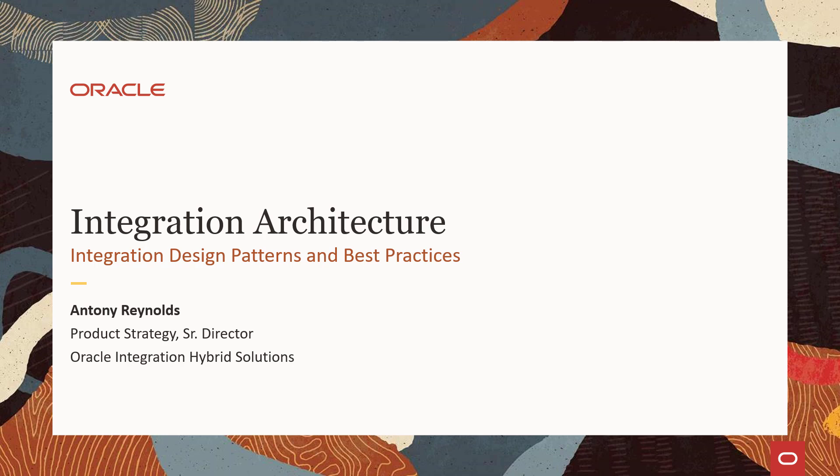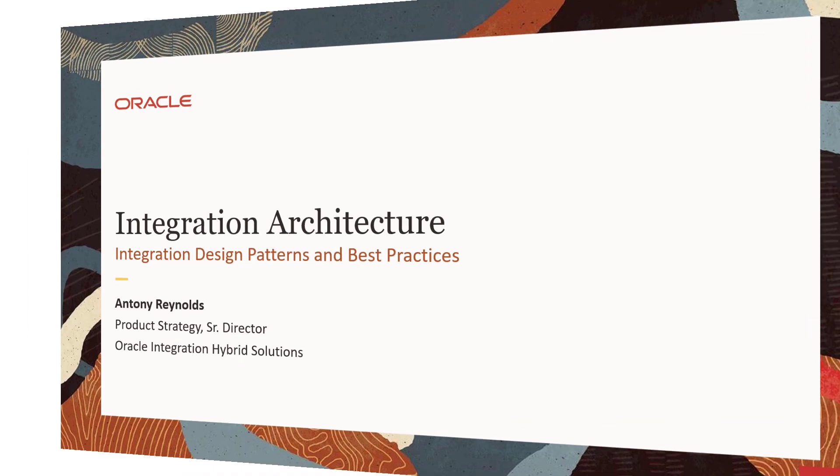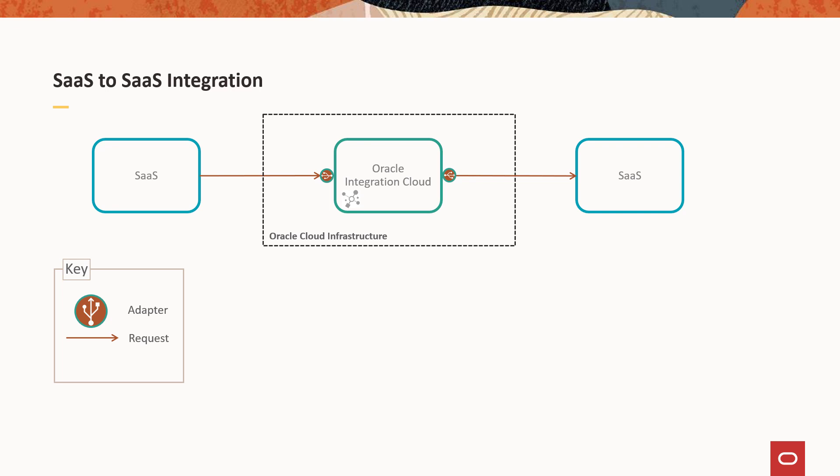What we'll talk about this morning is some patterns, anti-patterns, and best practices. The basic focus for OIC was that it was built to be in the sweet spot for cloud-to-cloud integration — typically SaaS-to-SaaS applications, perhaps Salesforce to ServiceNow, for example. For this, there is no additional infrastructure required beyond what OIC provides.